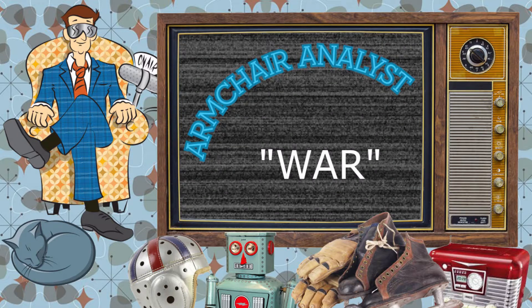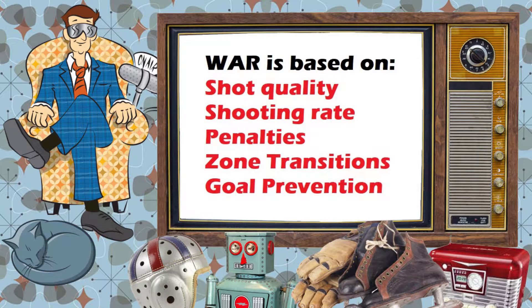WAR is basically a Frankenstein monster of stats from on-ice events. The categories that influence WAR directly include shot quality, shooting rate, penalties, zone transitions, and for goalies, goal prevention.